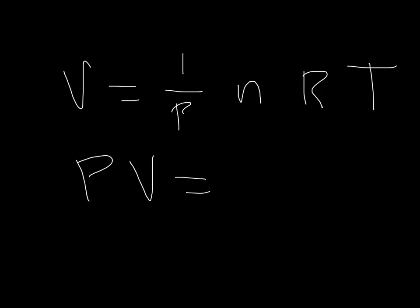And if we put the proportionality constant in there, we get something that looks like this. V is now equal to 1 over P times N times R times T. So we usually don't write the equation like this, we usually write it like this.